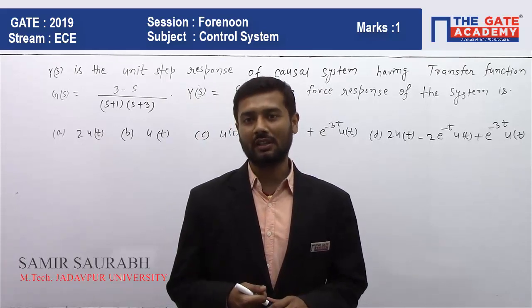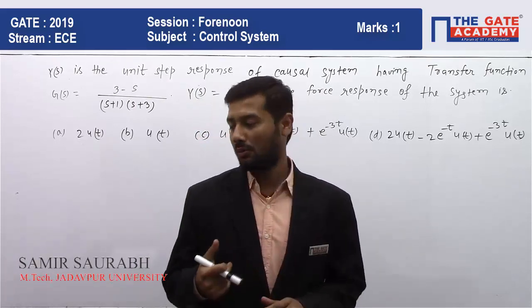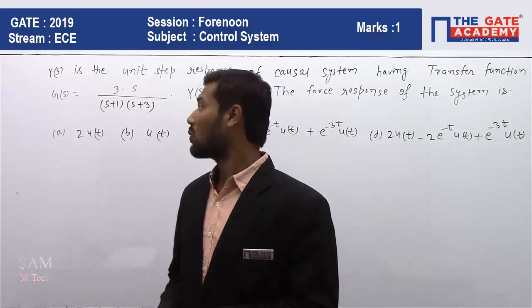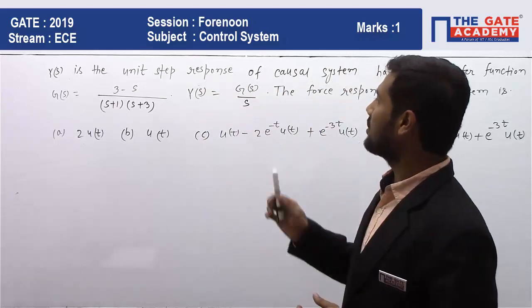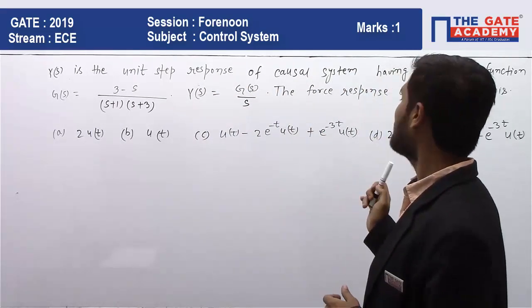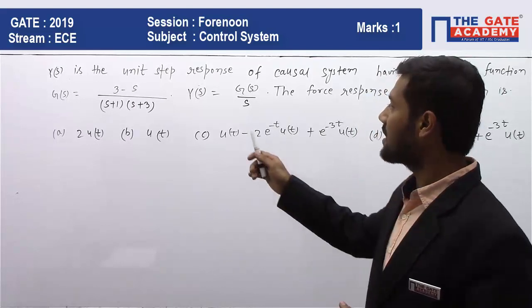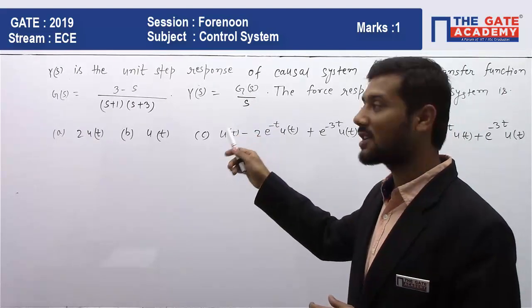In this video we'll be solving a question of control system from time response analysis. The question is: Y(s) is the unit step response of the causal system having transfer function G(s) = (3-s)/[(s+1)(s+3)], where Y(s) = G(s)/s or forced response of the system is...